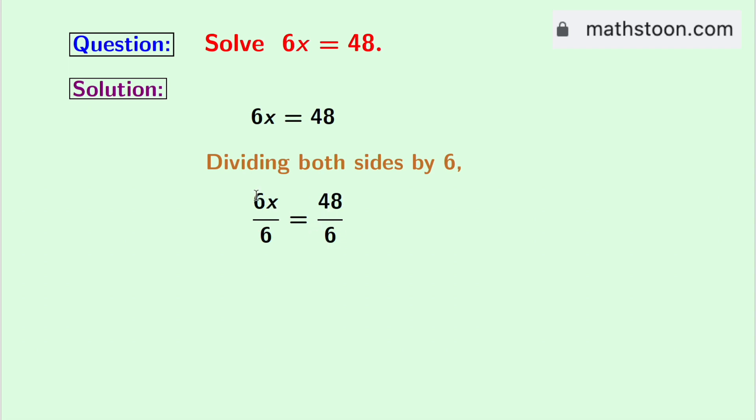See that in the left hand side, we have 6 in both the numerator and the denominator. So it gets cancelled, and we are left with x.